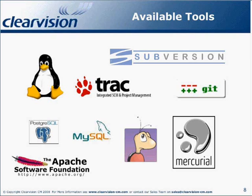In addition to these, there are continuous integration and build server tools. Hudson monitors executions of repeated jobs, such as building a software project or jobs run by cron. Current Hudson focuses on two things: building and testing software projects continuously, and monitoring externally run jobs. There is also CruiseControl, a framework for a continuous build process that includes plug-ins for email notification and various source code control tools, and a web interface to view the details of current and previous builds.